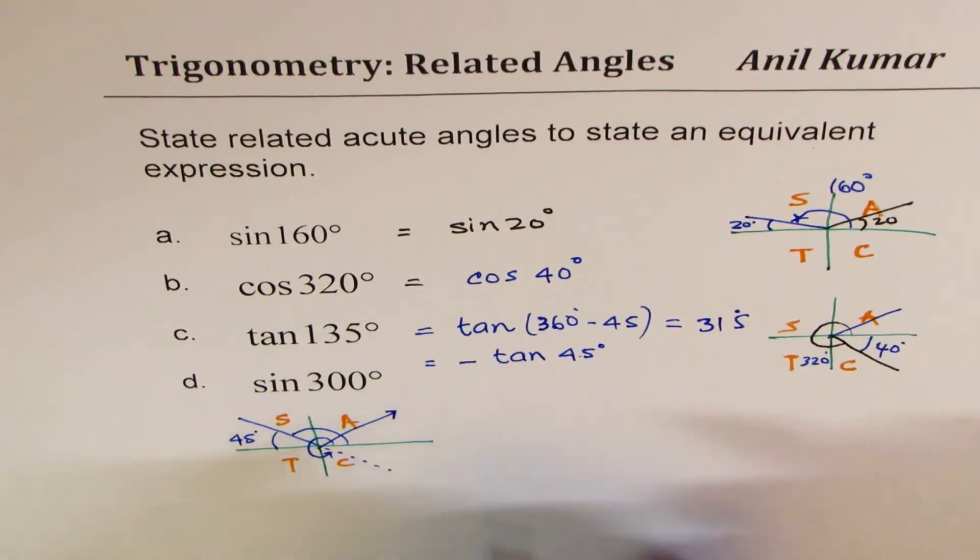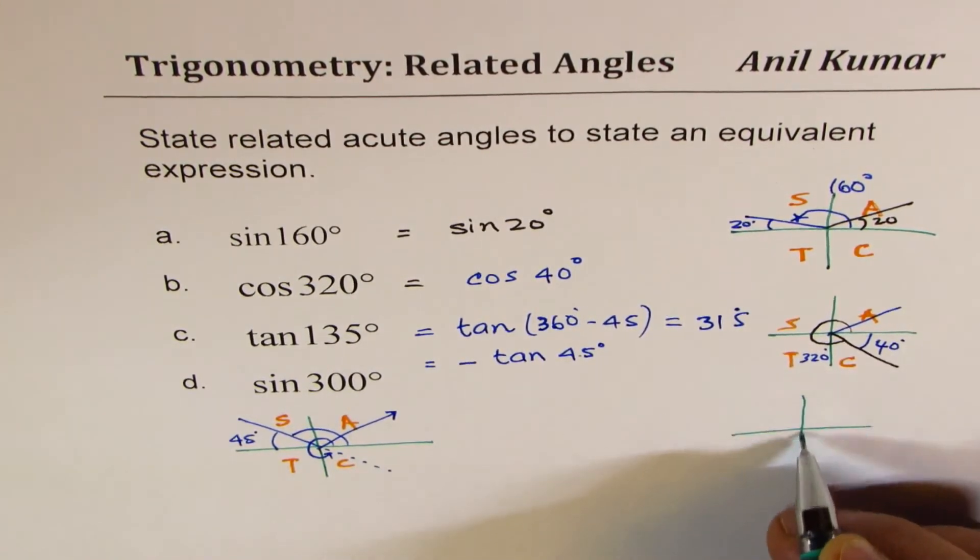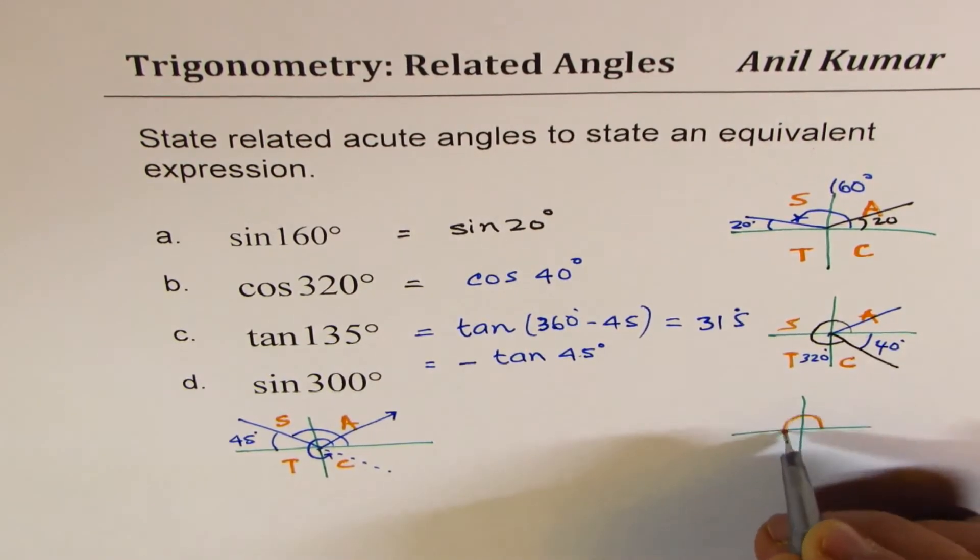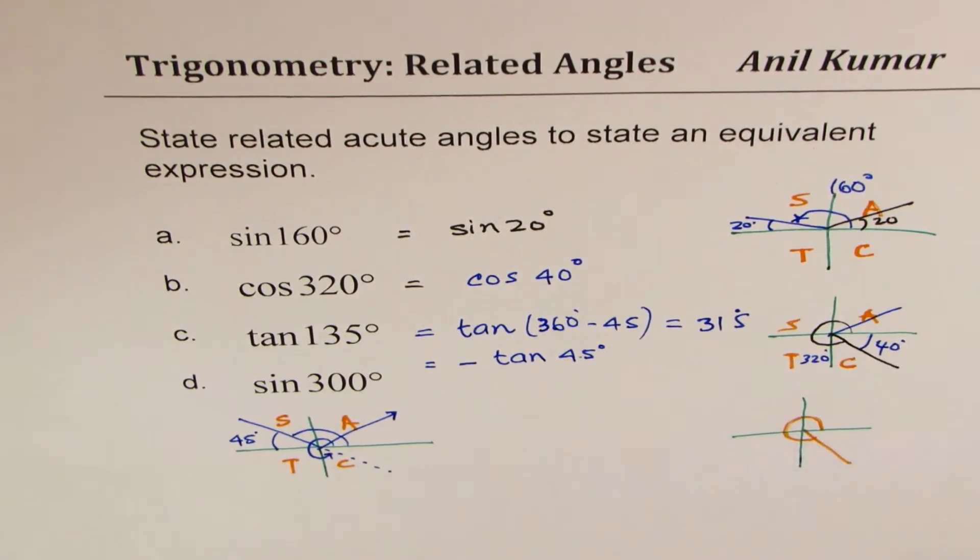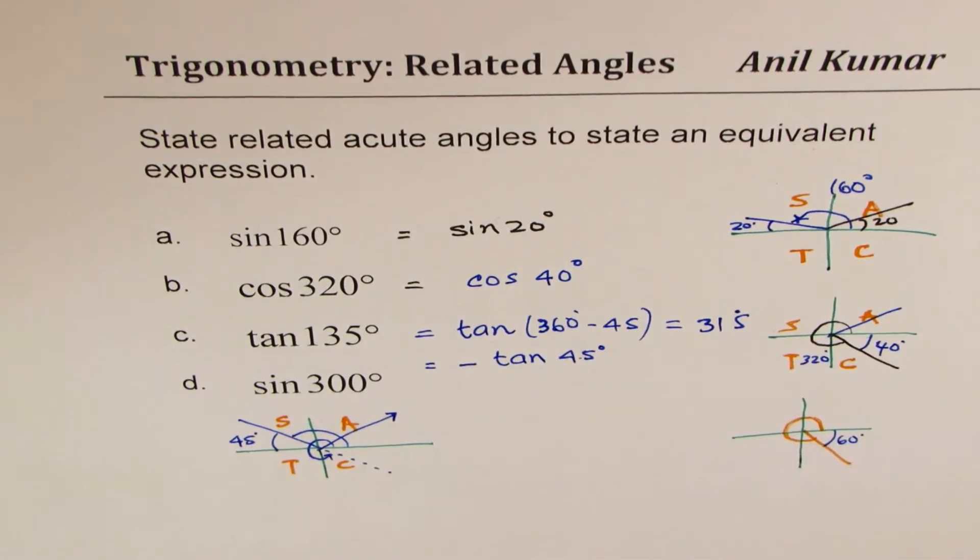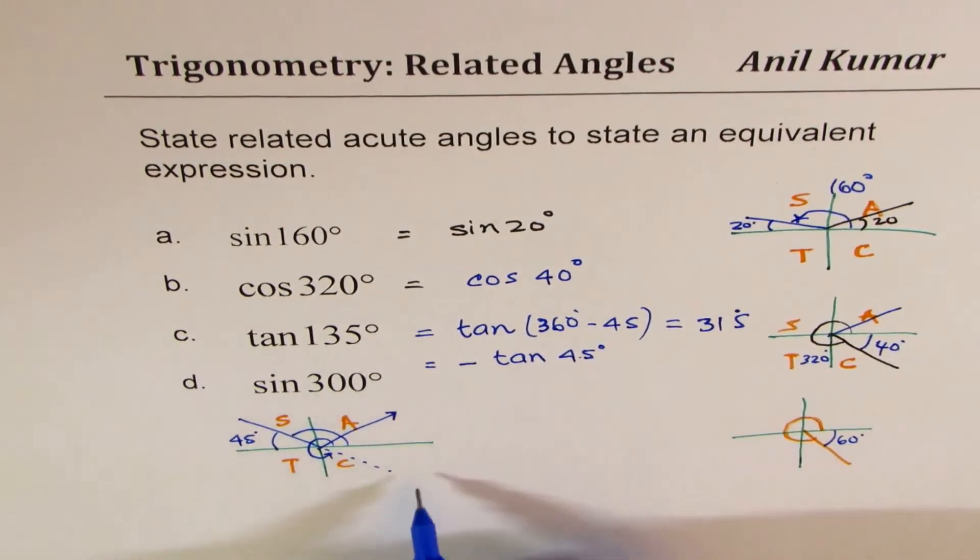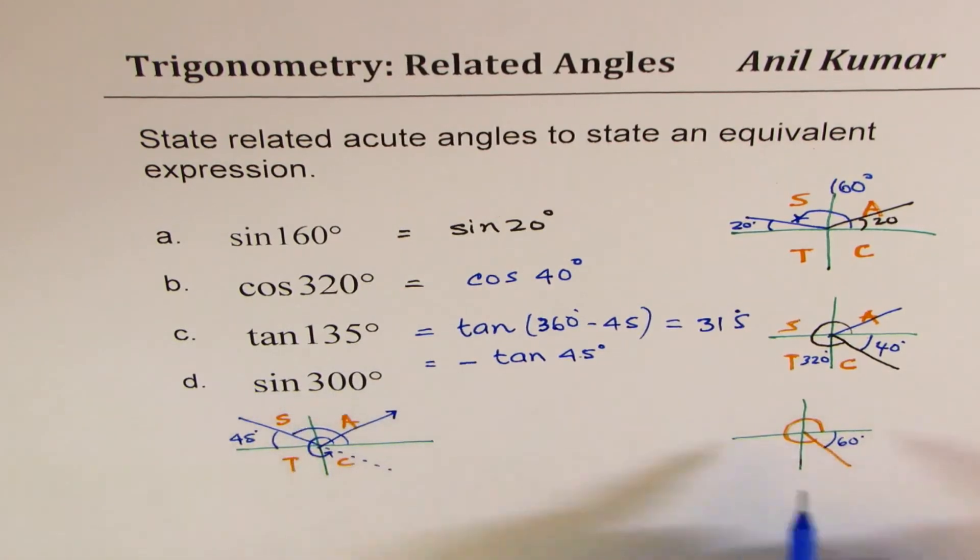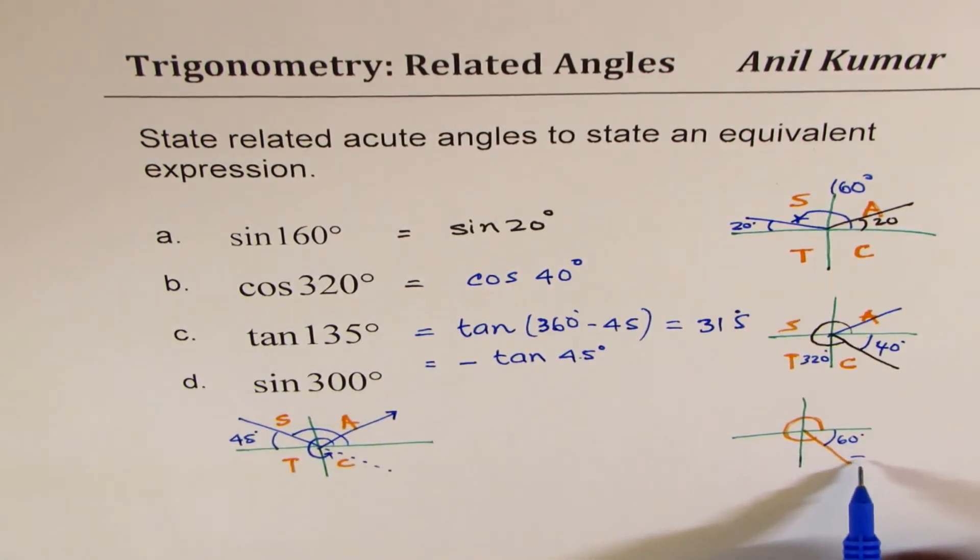Now let's look into the last one here, which is sine 300. Now sine 300 means that you're again in quadrant 4 where the acute angle is 60 degrees. So the idea is to find the acute angle, and the second thing is whether it is negative or positive. Now this one is negative. Since you are in quadrant 4, sine is also negative in quadrant 3.